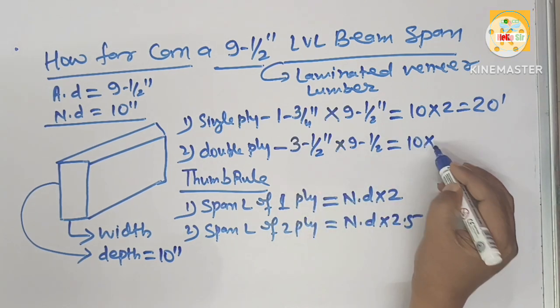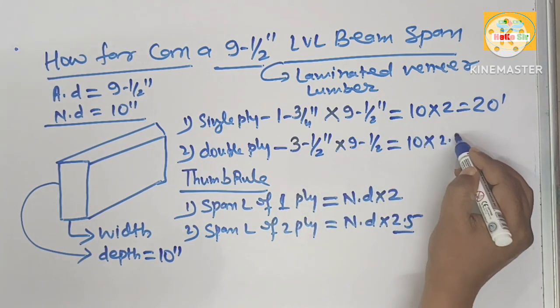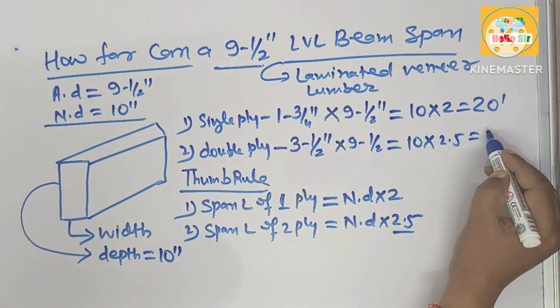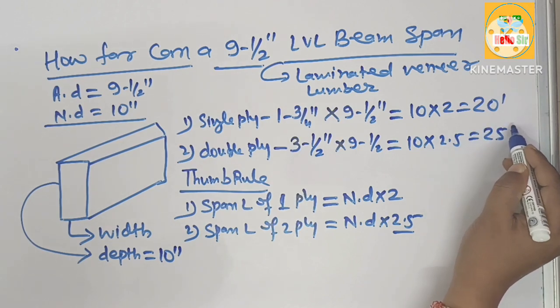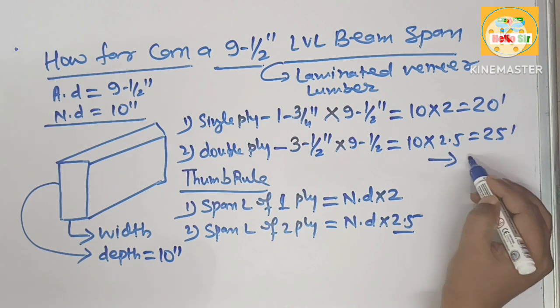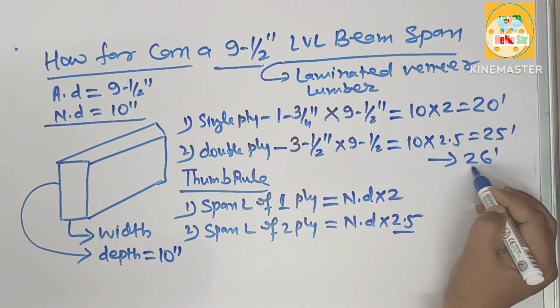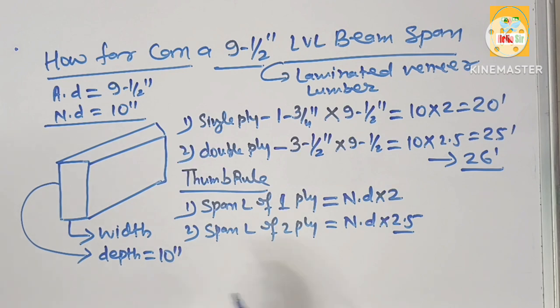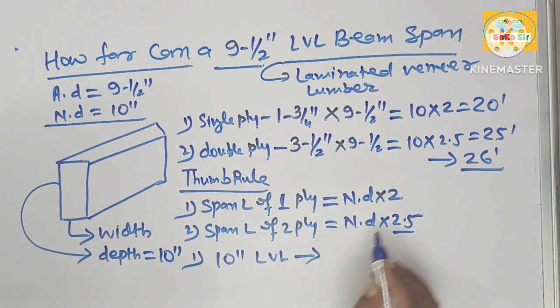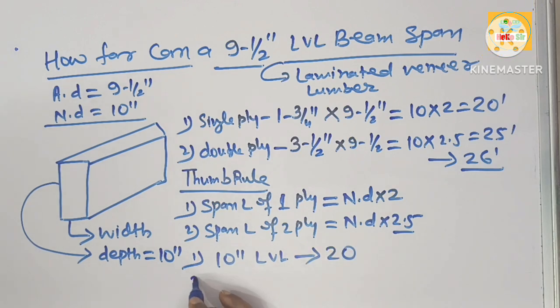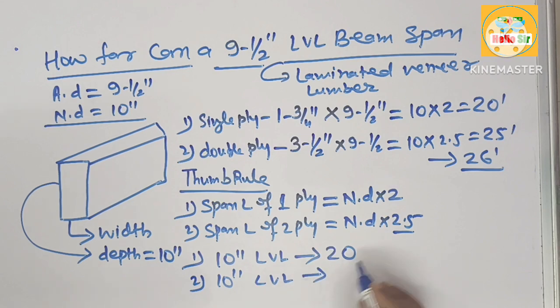And the nominal depth 10 inches multiplied by 2.5 is about 25 feet. It may be written as approximately 26 feet. That's why for the single ply 10 inch LVL can span maximum distance of 20 feet. And the 10 inch double ply LVL may span about 26 feet.